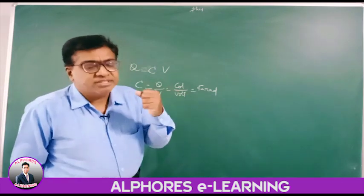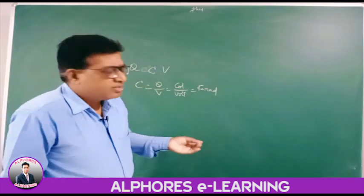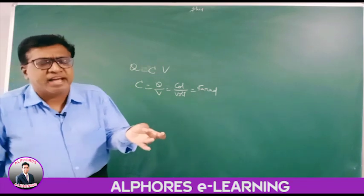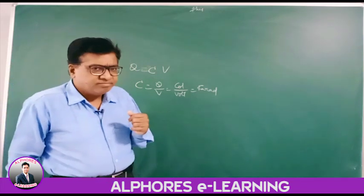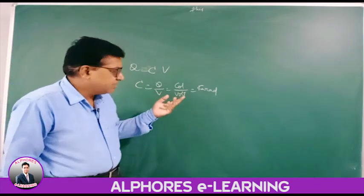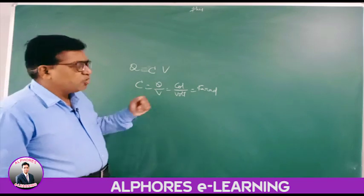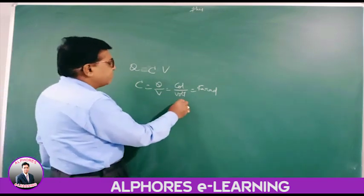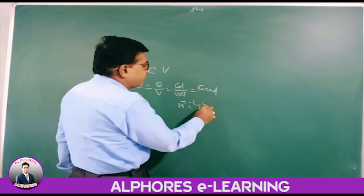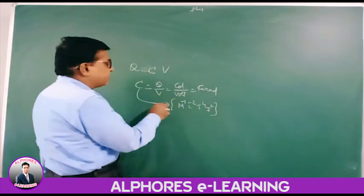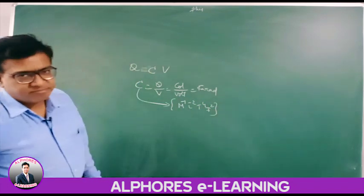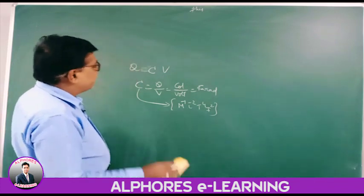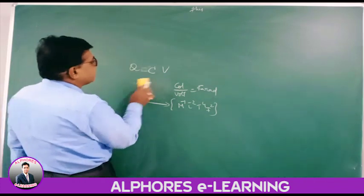Farad is a bigger unit, so we make use of multiple units like millifarad, microfarad, nanofarad, picofarad, etc. The dimensional formula for capacitance is M⁻¹ L⁻² T⁴ I² — very important for entrance examinations. Then the capacitance of a capacitor: today we will study the different types of capacitors.